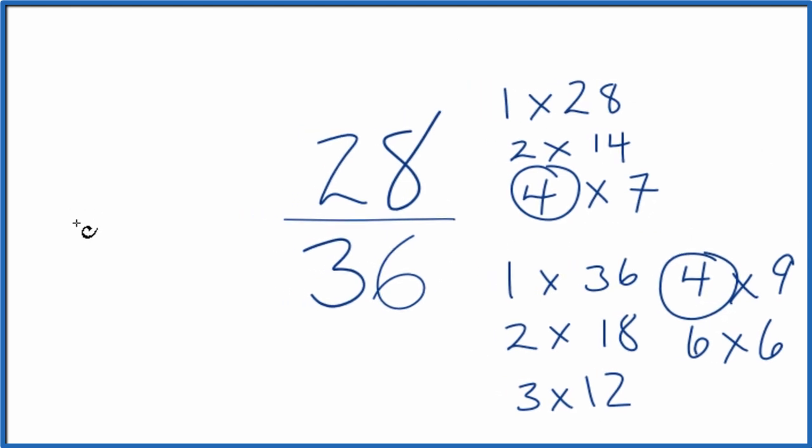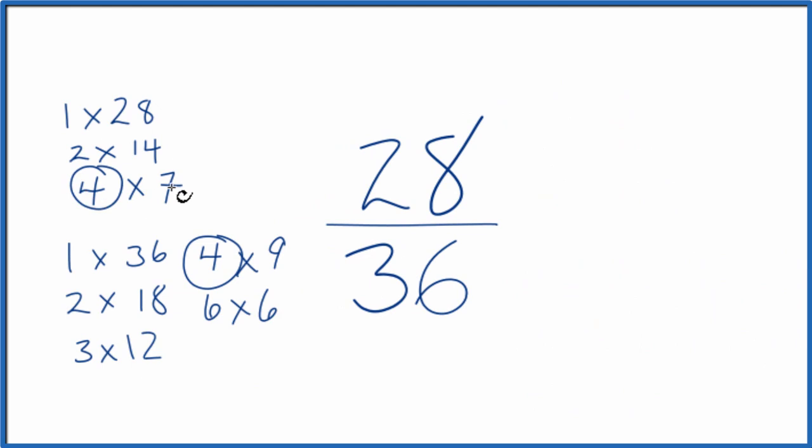Let's move these over here. So 28 divided by 4 equals 7 and then 36 divided by 4 equals 9 and we end up with 7 ninths.